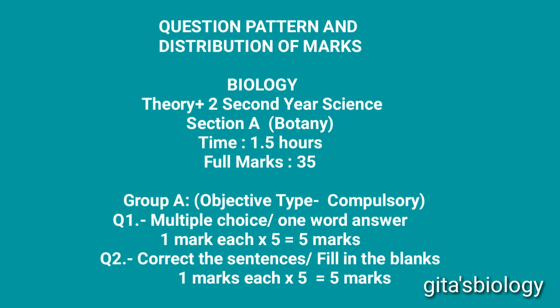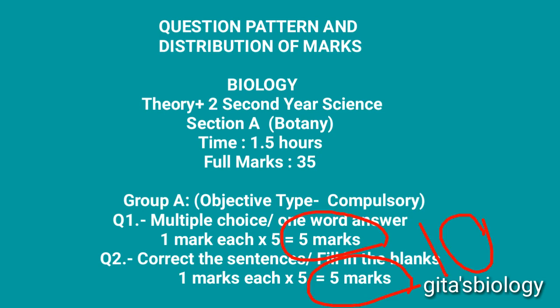Group A gives two questions — all are short type and all are compulsory. Question number one is multiple choice or one word answer, each carrying one mark: 1×5 = 5 marks. Question number two is correct the sentence or fill in the blanks, also one mark each: 1×5 = 5 marks. Total for Group A is 10 marks.